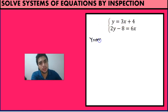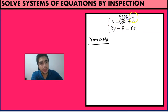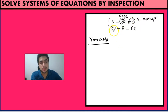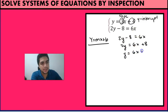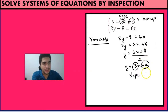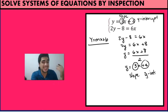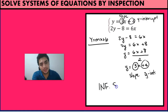Now let's tackle another problem. We have y equals 3x plus 4, which is already in slope-intercept form — slope is 3 and y-intercept is plus 4. For the second equation, 2y minus 8 equals 6x, we solve: 2y equals 6x plus 8, then divide by 2, giving us y equals 3x plus 4. We have the same slope and the same y-intercept, which means it is actually the same line, and because it is the same line, we have infinite solutions.